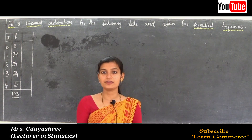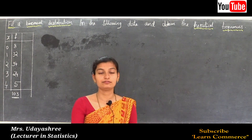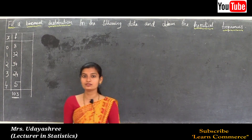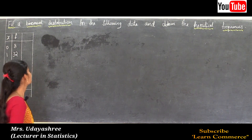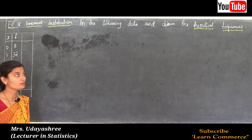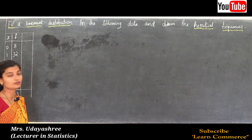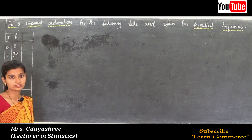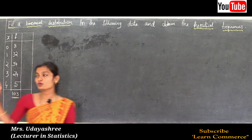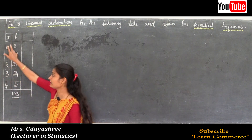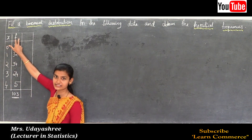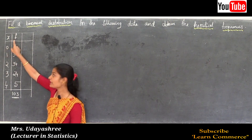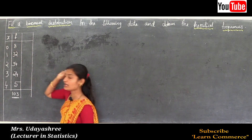Now let us look at a problem based on fitting a binomial distribution. The question is: fit a binomial distribution for the following data and obtain the theoretical frequencies. Observations are given as x and f, where x is the observed value and f is the frequency.